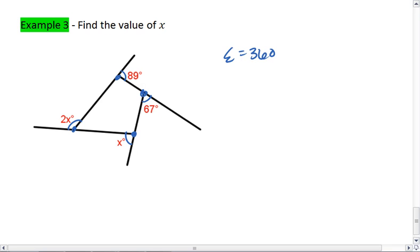So we find out that 2x plus x plus 67 plus 89 equals 360. 2x and x simplify to be 3x. 67 plus 89 is 156.